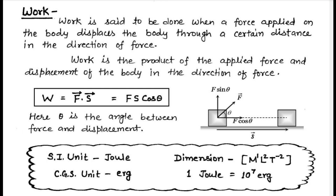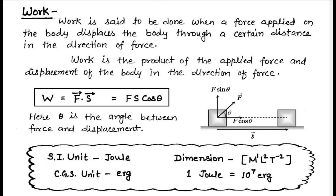In the diagram, an object is displaced by distance x from one position to another. Force is applied at a certain angle theta — the angle between the force and the displacement. The component of force along the direction of displacement is F·cosθ, so work done is W = F·s·cosθ. This cosθ represents the dot product of the vectors, so work done can be expressed as F⃗ · s⃗. The SI unit is joule and the CGS unit is erg. One joule equals 10 to the power 7 ergs.